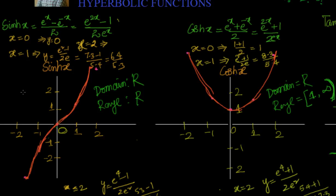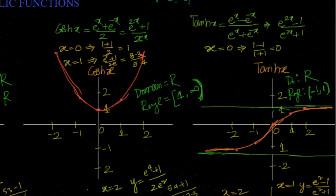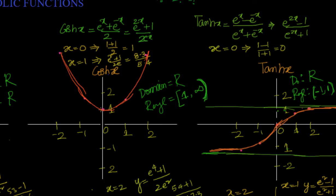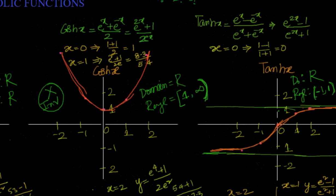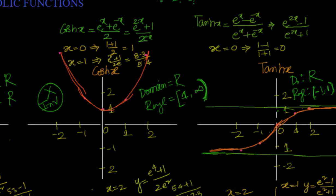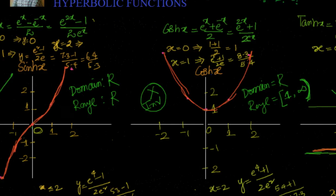Now let us look at whether these functions can be made into inverses. For hyperbolic sine, different values of x give different values of y — it is a bijection, so it is invertible and we can directly have an inverse function. For hyperbolic cosine, it is symmetric, meaning it is an even function, so the same y value corresponds to two x values — it cannot be directly inverted. However, we can restrict the domain to [0, ∞) and then make it an inverse function. For hyperbolic tangent, different x values give different y values, so it is also invertible.